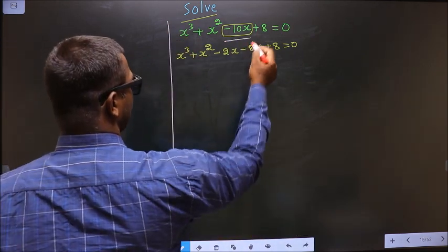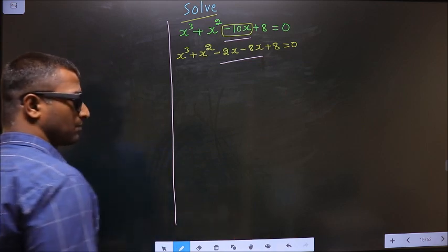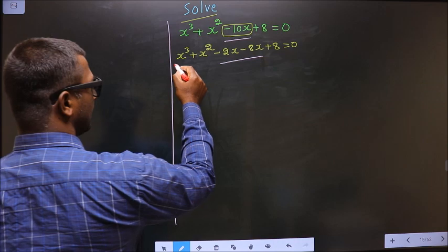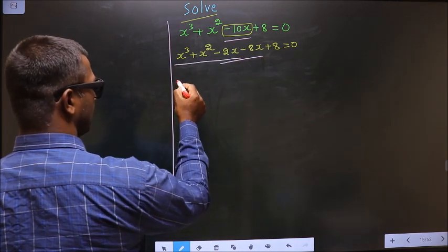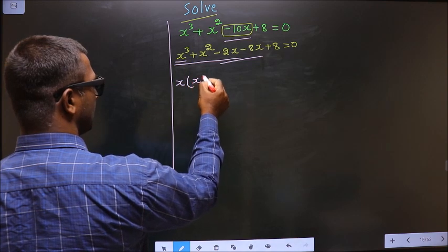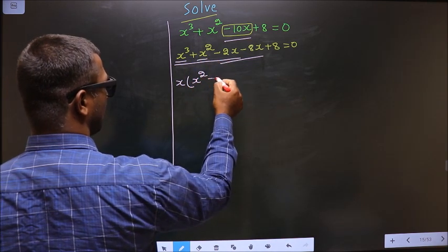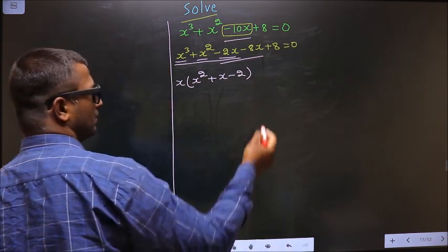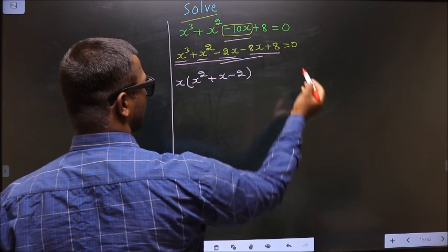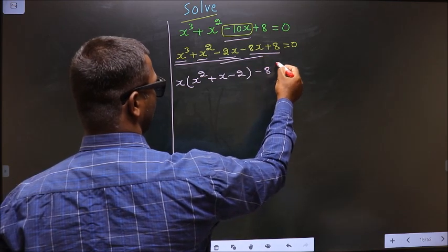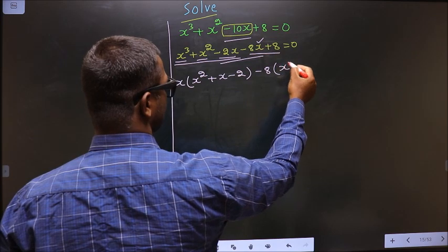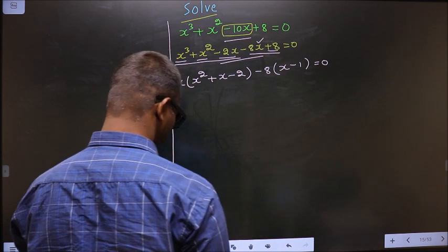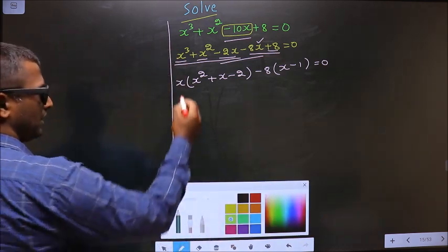In place of minus 8x I have written this — understood. Next, what can be taken out common from the first three terms is x, so here you are left with x square, here you are left with x, and here you are left with minus 2. Now what can be taken out common from the last two terms is minus 8, so here you are left with x and here you will get minus 1, equal to 0.